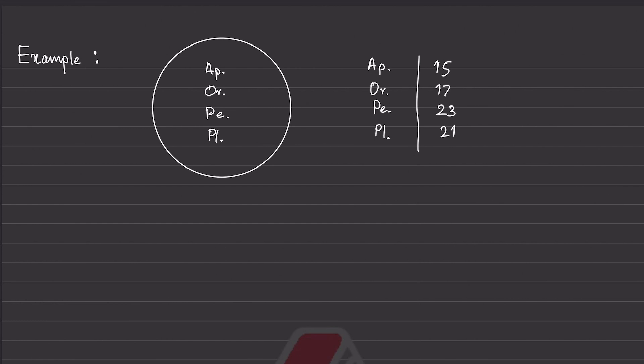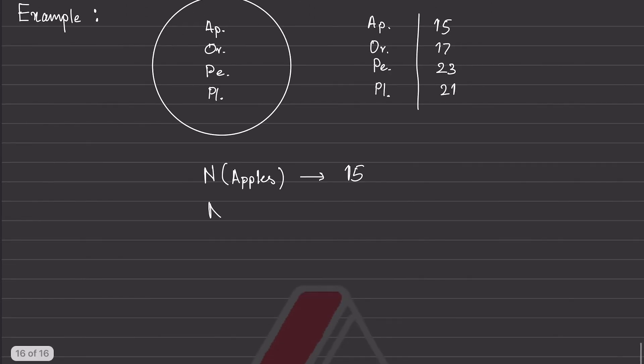Alright, that's all good. Well, if we apply the function n for, say, numbers on our apples, we should be outputted with the number of apples that are in the basket, which is 15. And so if we do the same for oranges, we get 17 as the output, because there's 17 oranges.